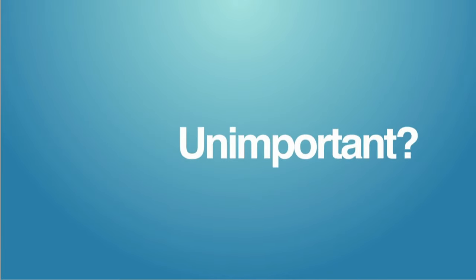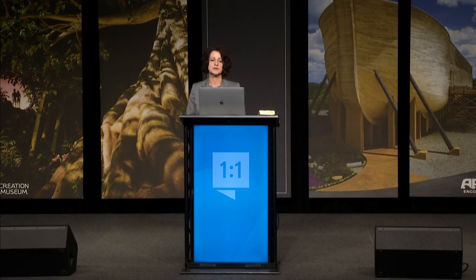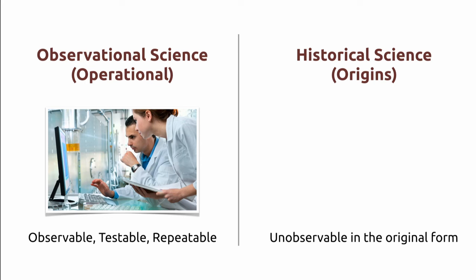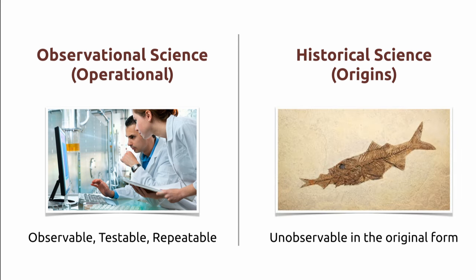Does that mean historical science is unimportant? Not at all. Observational science — or operational science — is something that is observable, testable, and repeatable, which is very important in the field of forensic science. Using those observable, testable, repeatable methods, we will then apply them to something that happened in the past, which is historical science or origin science — looking at evidence that is unobservable in its original form and making an analysis or interpretation of that.